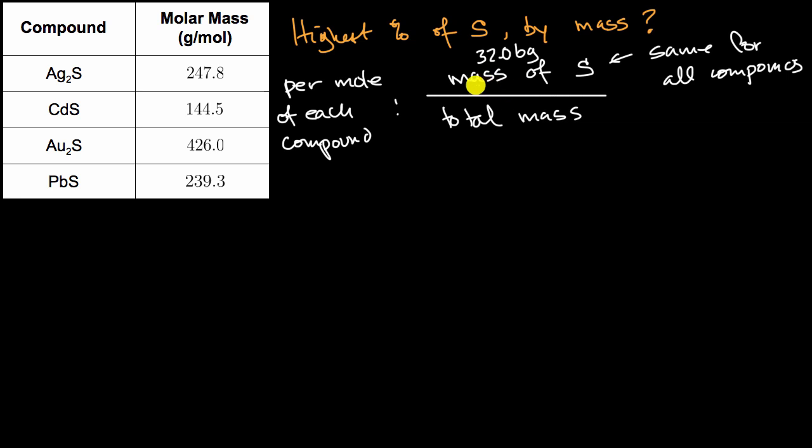But the big picture is, in all of the cases, I'm going to have the same value in the numerator. So if I want to have the highest percentage, I would want to minimize the value in the denominator. So I would really want to see which one would have the lowest mass for a mole of the molecules, or another way of thinking about it, which of them will have the lowest molar mass?